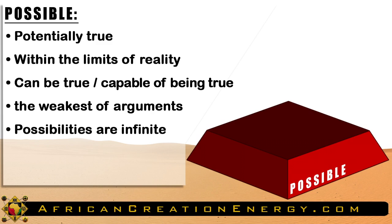Just because something can be true doesn't mean that it is true. When someone is arguing from the mere possibility of something, you will hear them saying things like 'this can happen' or 'that can be true.' The word 'can' is a key word indicating someone is arguing from possibility. Possibility arguments are the weakest of arguments — only one step above impossibility or falsehood. There are almost an infinite number of possibilities that can be imagined for any given subject, and we have neither the time nor the energy to weigh every single thing that has mere possibility to be true. Thus, we move to the next layer: plausibility.